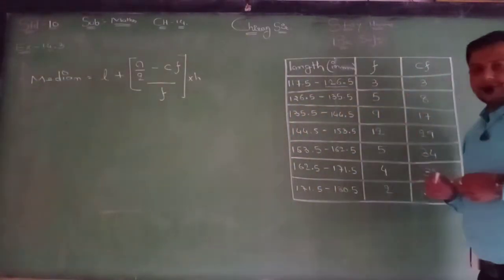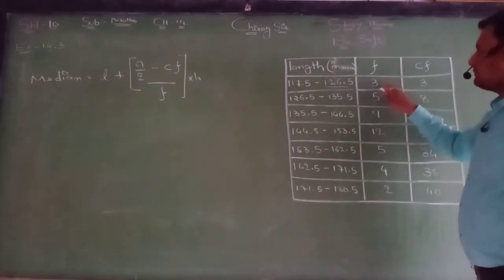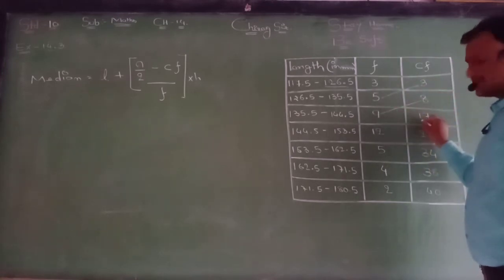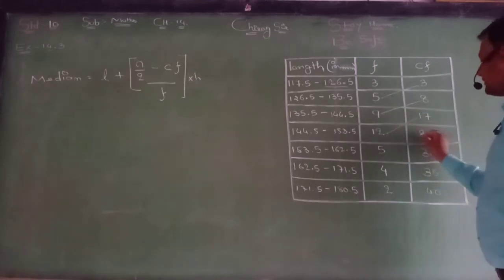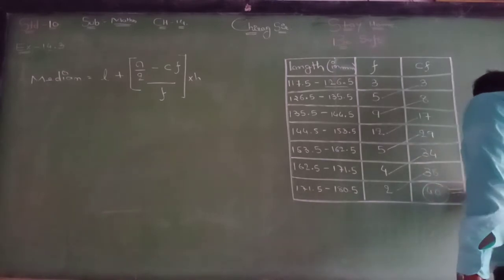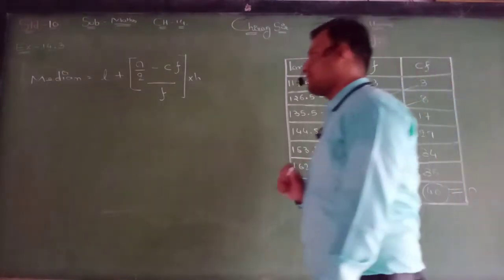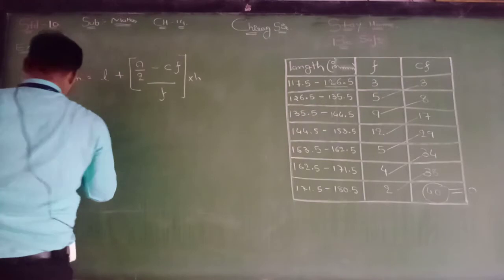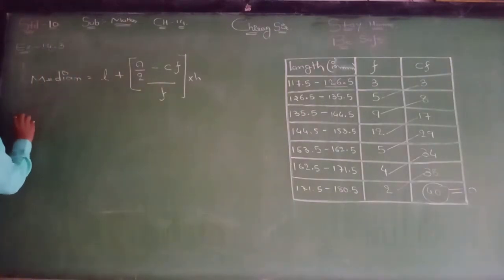Cumulative frequency: 3, 3 plus 5 equals 8, 8 plus 9 equals 17, 17 plus 12 equals 29, 29 plus 5 equals 34, 34 plus 4 equals 38, 38 plus 2 equals 40. This 40 is our N. So N is 40.